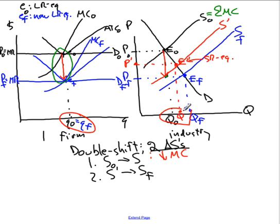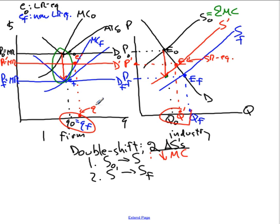At Q-prime — what's happening there? Well, in the short run the firm is confronted with price P-prime. The firm says: the price is P-prime, my marginal cost curve has dropped to MCF, so if I want to maximize profits I'll produce at E-prime where MC equals MR. So in the short run the firm does produce a little bit more at Q-prime.